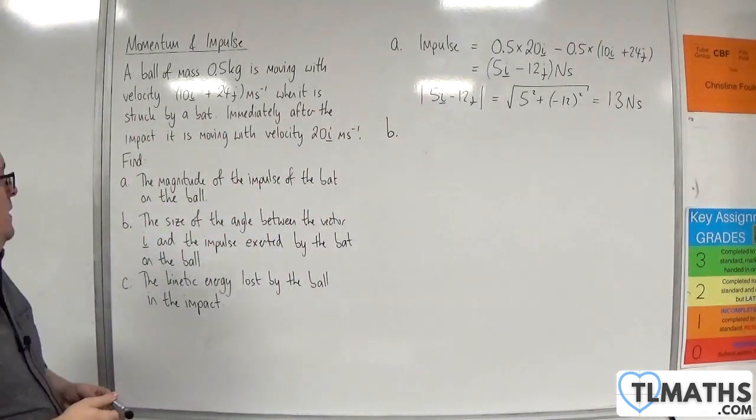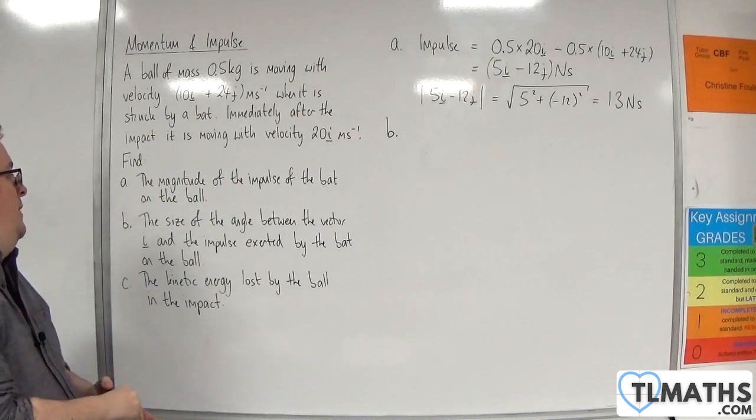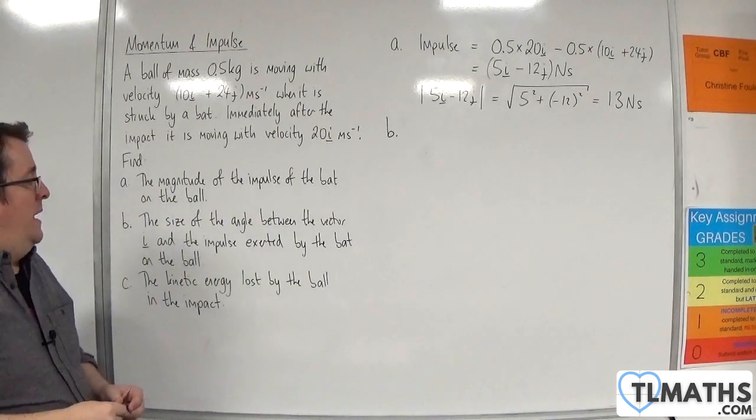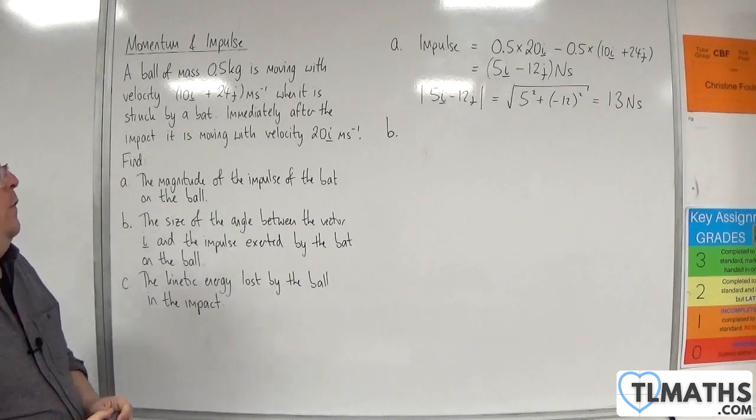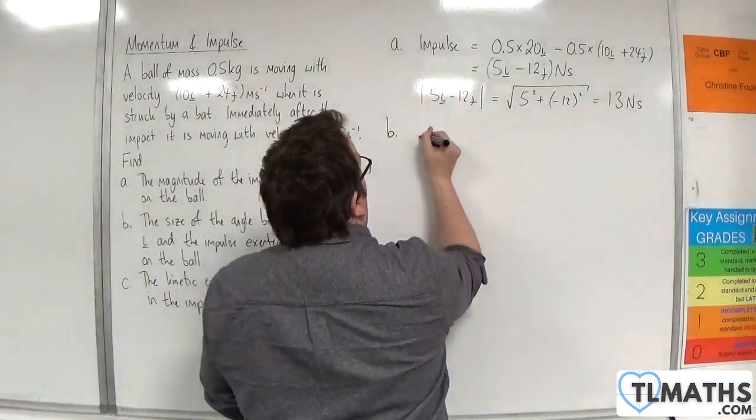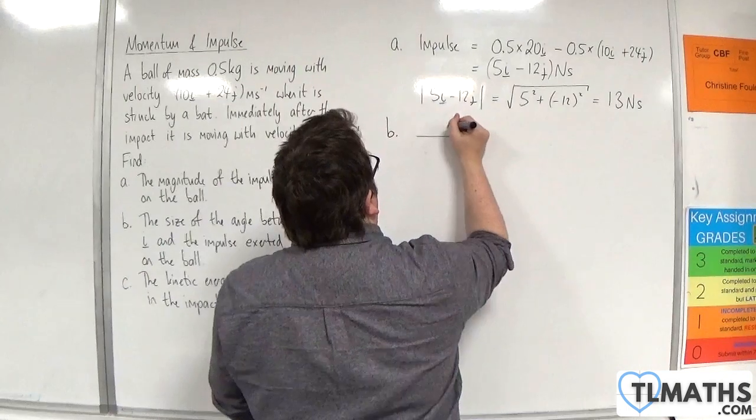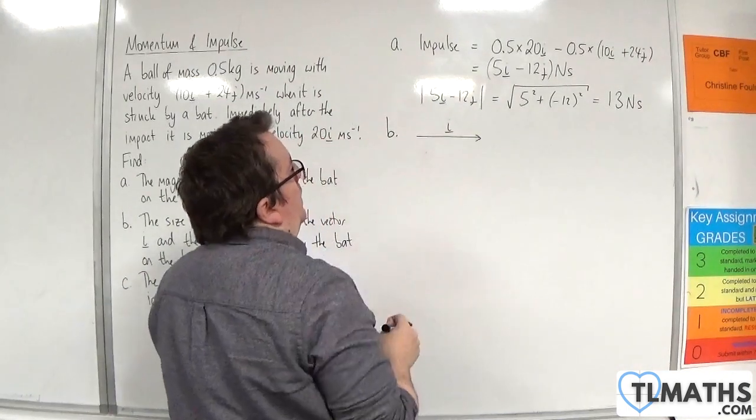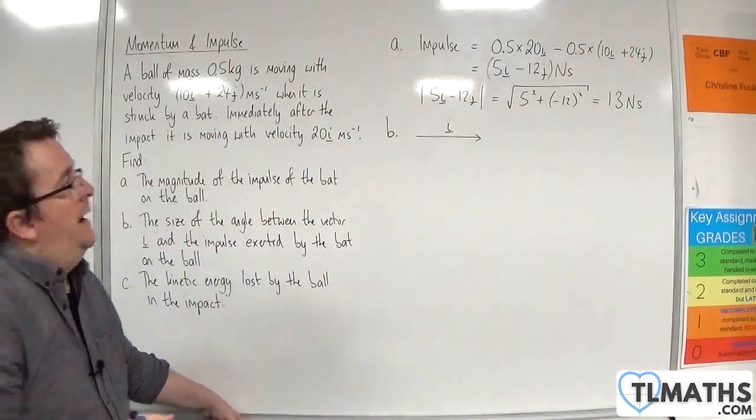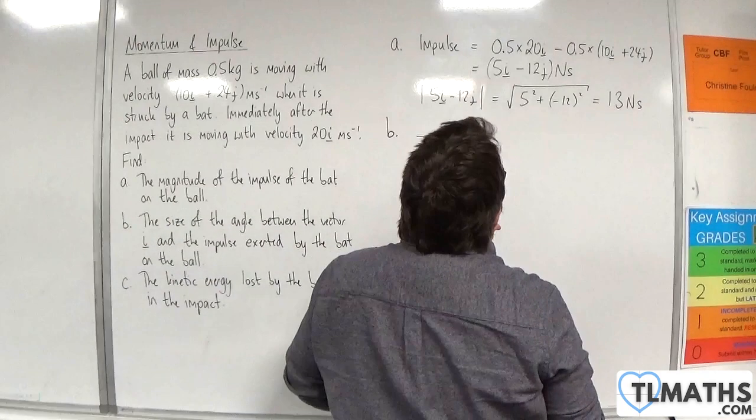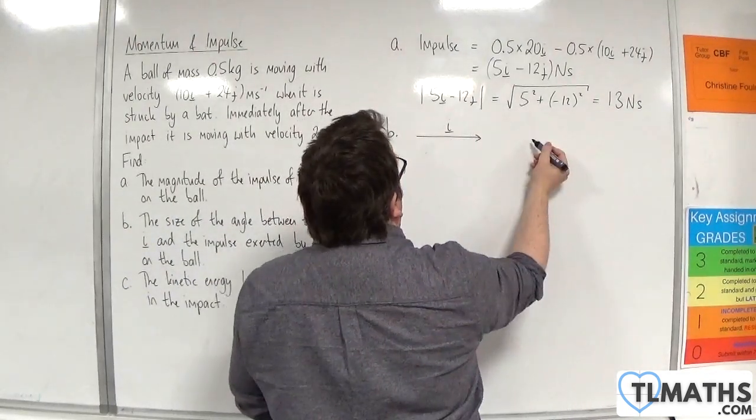Okay part B. The size of the angle between the vector i and the impulse exerted by the bat on the ball. So the vector i is just 1 in the horizontal direction and then we've got 5i minus 12j. So 5 along and 12 down.